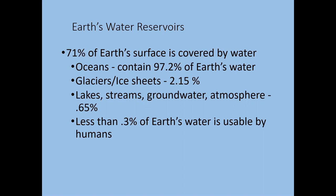Now we're going to talk about where this water is located on Earth — the water that carves the surface landscapes we see and also does geological work underground. Earth is called the water planet: 71% of Earth's surface is covered by water. The oceans contain 97% of Earth's water, glaciers and ice sheets contain 2%, and streams and groundwater contain just 0.65%.